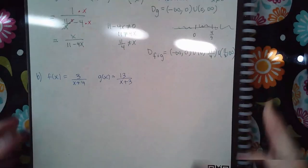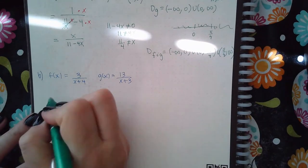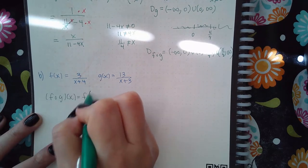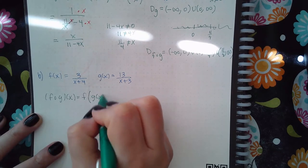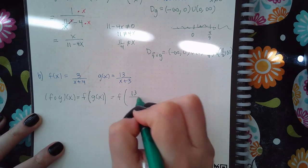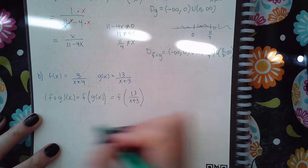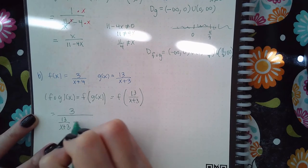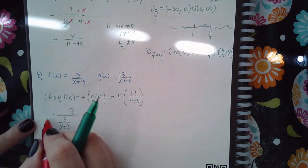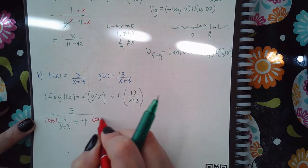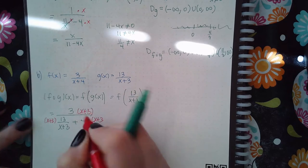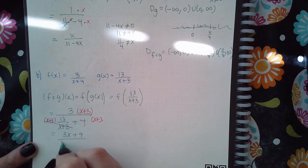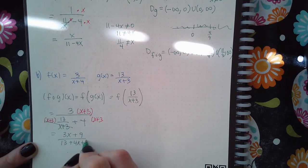Now for part b, we still want f of g of x, which is f of 13 over (x plus 3), which equals 3 over (13 over (x plus 3)) plus 4. Multiplying by the common denominator x plus 3, I get 3x plus 9 over 13 plus 4x plus 12.